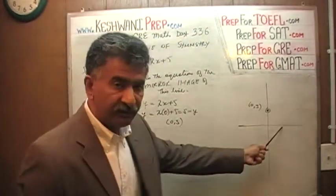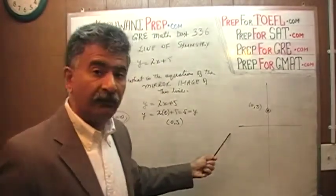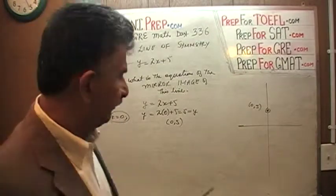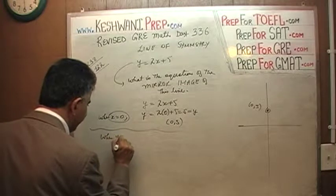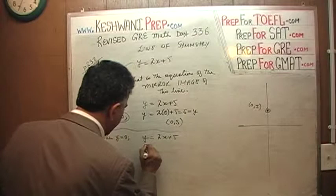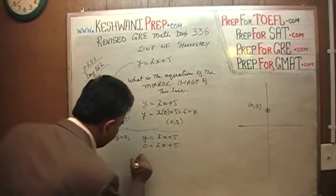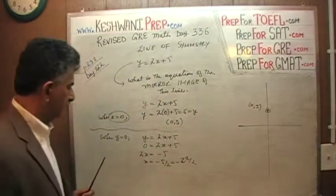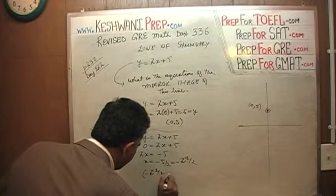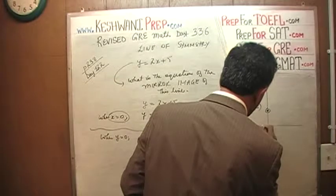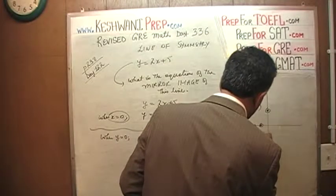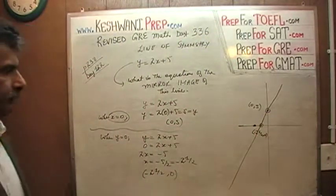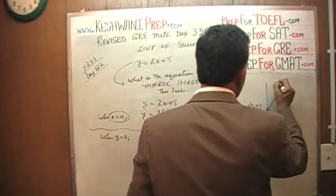Now figure out the x-intercept. To find the x-intercept, we set y equal to 0, because all points along the x-axis have a y-coordinate of 0. So with y = 0 in the equation y = 2x + 5, we get 2x = -5, and x equals negative 5 over 2, which is negative 2 and a half. So the x-intercept is at (-2.5, 0). That gives us our original line: y equals 2x plus 5.